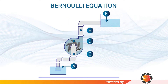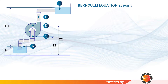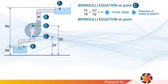Applying the Bernoulli equation at point C — where water is entering the pump — gives us: pc/(ρg) + vc²/(2g) + z1, which is the total head at point C. Similarly, applying the Bernoulli equation at point D — where water is leaving the pump — gives: pd/(ρg) + vd²/(2g) + z2.